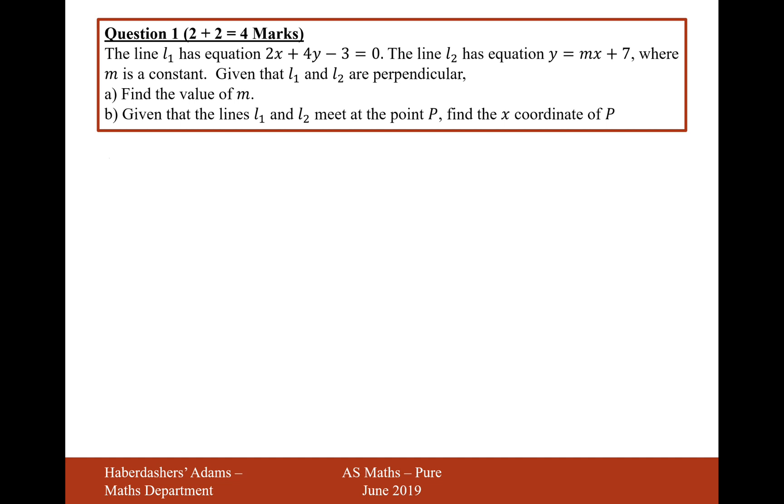So what we need to do is work out the gradient of the first line, L1. The equation is 2x plus 4y minus 3 equals 0. It's much easier to tell the gradient when it's in the form y equals mx plus c. So let's rearrange it to 4y equals minus 2x plus 3, then divide both sides by 4 to give us minus 1 half x plus 3 quarters.